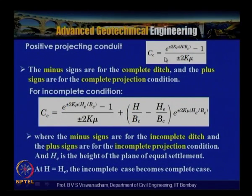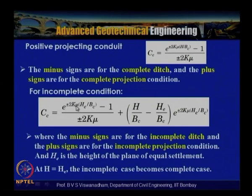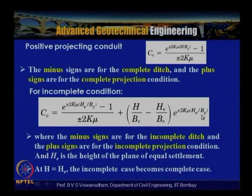In that expression, the minus signs apply to the complete ditch condition and plus signs to the complete projection condition. For the incomplete condition, Cc = (e^(±2kμ × he/bc) − 1) / (±2kμ) + (h/bc − he/bc) × e^(±2kμ × he/bc), where minus signs apply to incomplete ditch and plus signs to incomplete projection conditions. Here, he is the height of the plane of equal settlement.